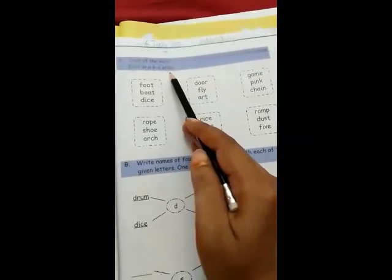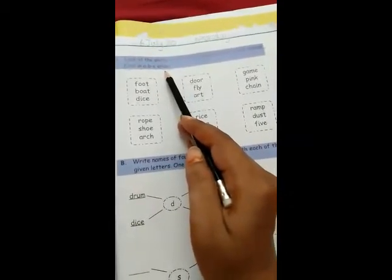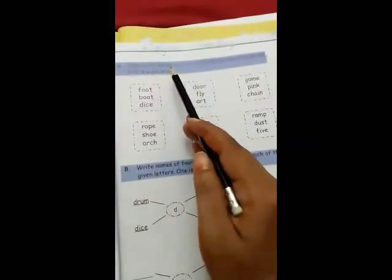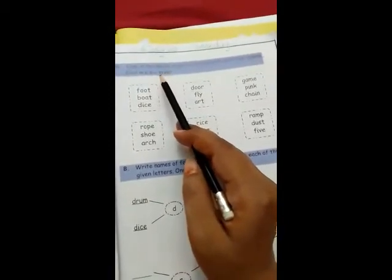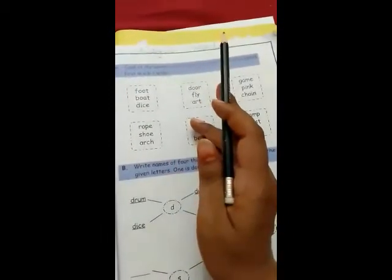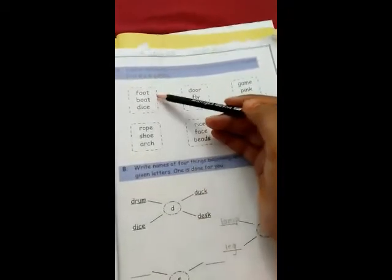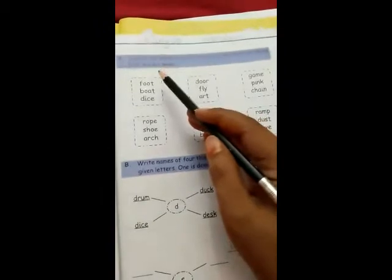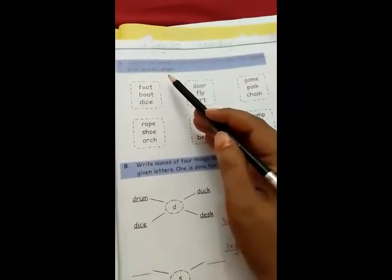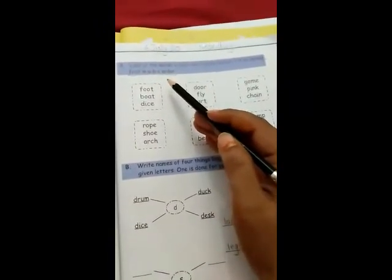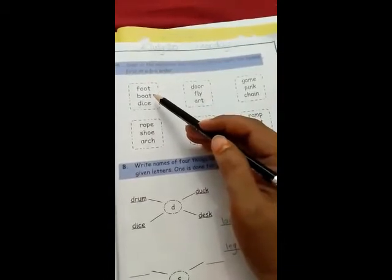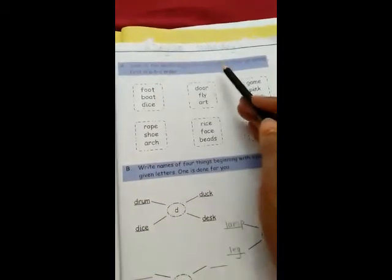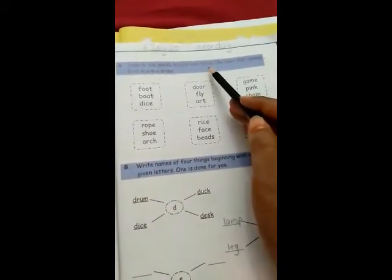Yesterday we have done alphabetical order. Today we will do what comes first in ABC order. In alphabets, in ABC, the letter that comes first, we will circle it.